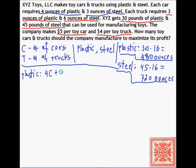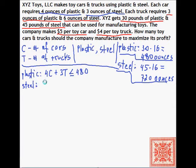Let's figure out the amount of plastic the company can use. With C and T as the number of cars and trucks respectively, we have 4 ounces of plastic per car and 3 ounces of plastic per truck. So 4C plus 3T has to be less than or equal to 480 ounces. That's the first linear inequality — the constraint on the number of cars and trucks, our two variables C and T, that we need to determine to maximize profit.